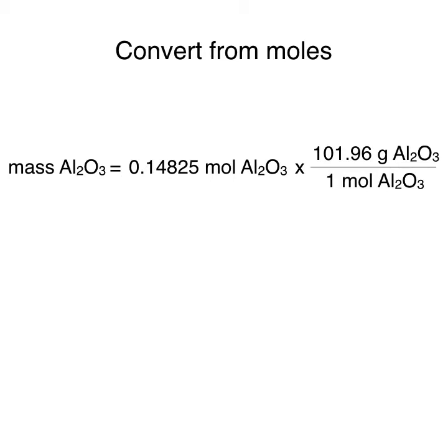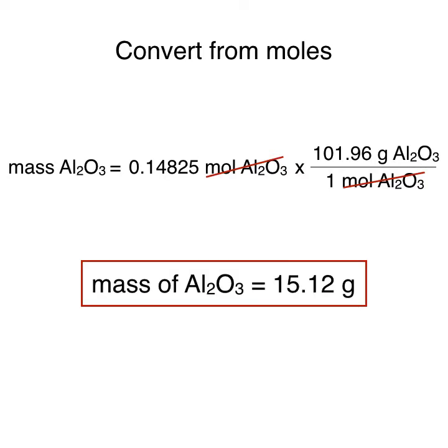This molar mass was obtained by adding 2 times the molar mass of aluminum, 26.98 grams per mole, and 3 times the molar mass of oxygen, 16 grams per mole. Doing this, our moles of aluminum oxide cancel out and we're left with 15.12 grams of aluminum oxide produced.